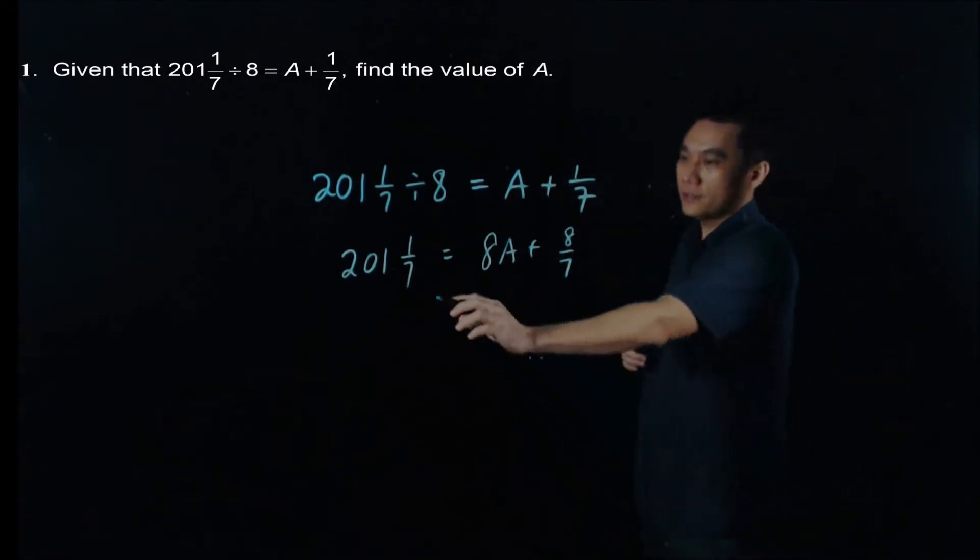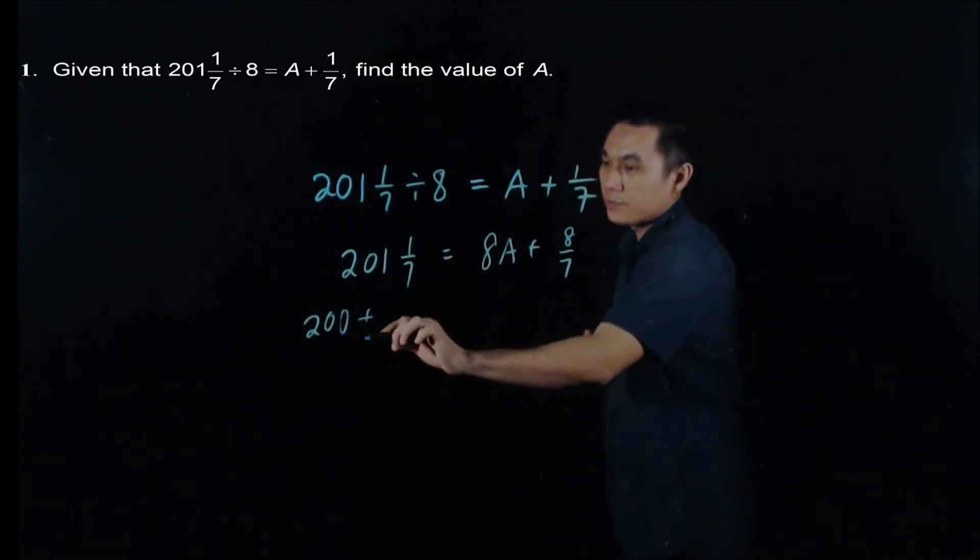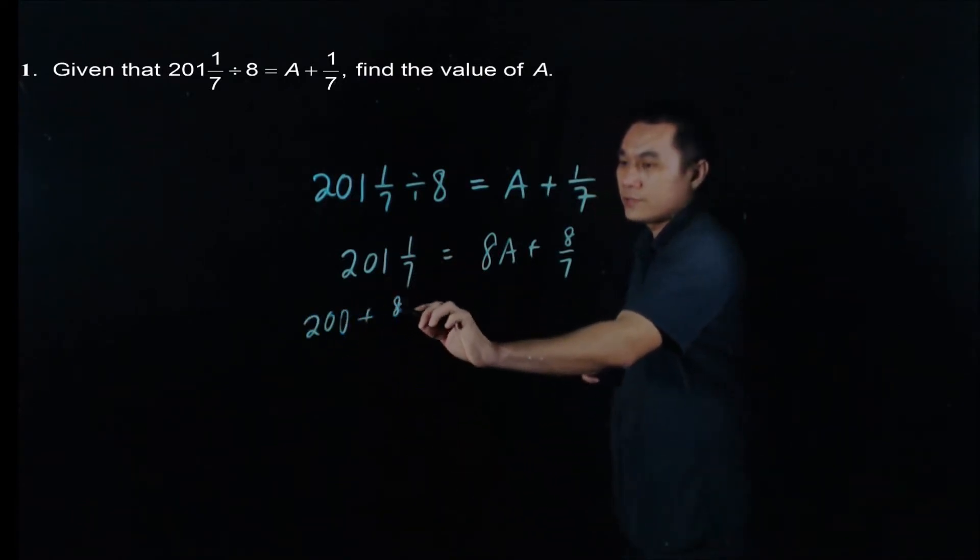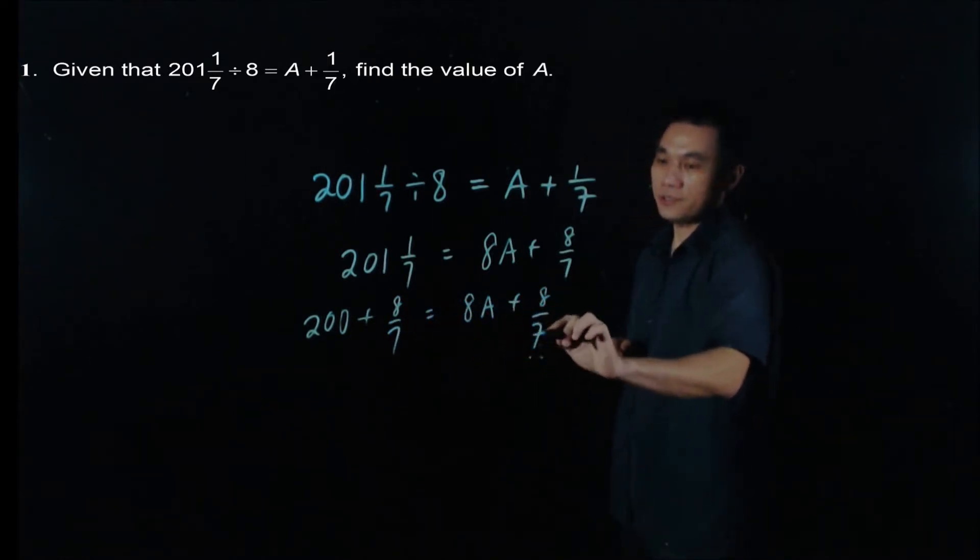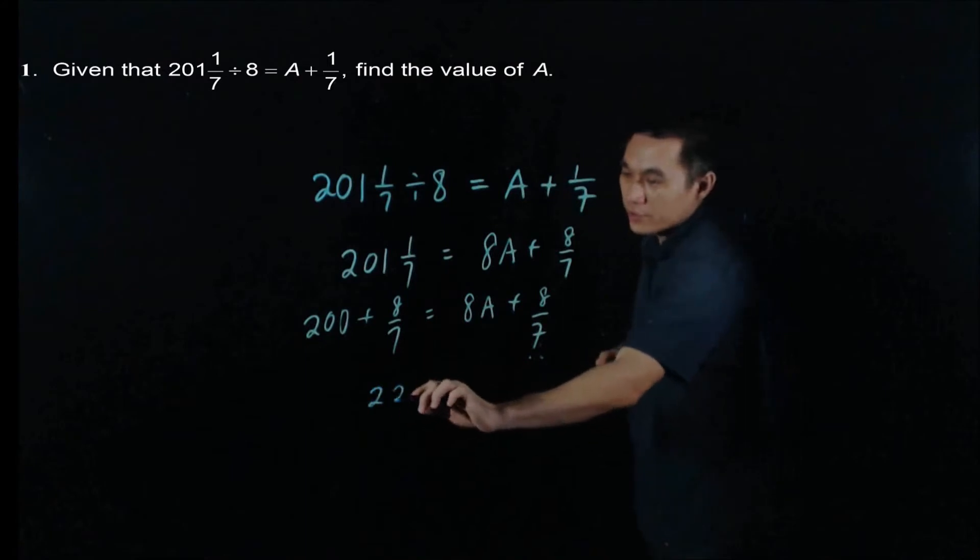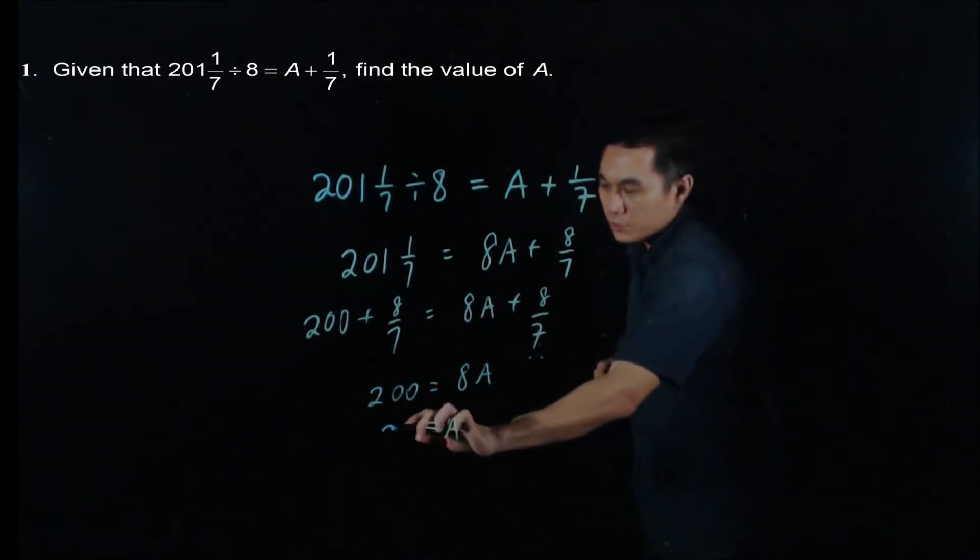Now note that 201 1/7 can be written as 200 plus 8/7. And this means that 200 is equal to 8A, and therefore A equals 25.